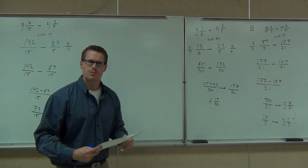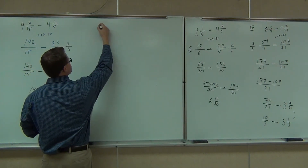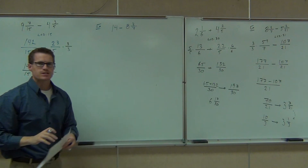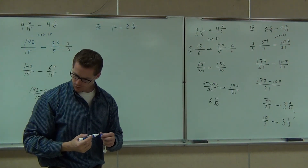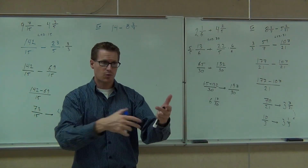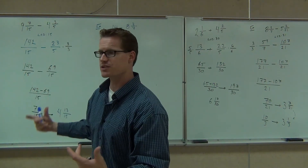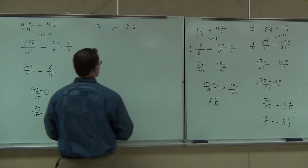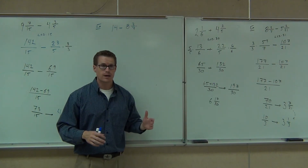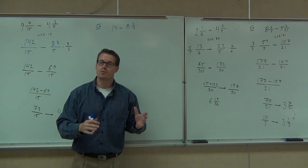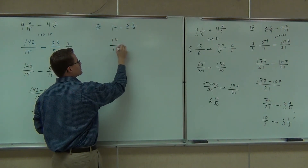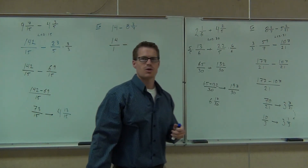Can you do the same thing with a whole number? Let's see: 14 minus 8 and 3 sevenths. Yeah, let's put a 1 underneath that. We are going to change 14 into an improper fraction — 14 over 1. We cannot just subtract 14 minus 8. If you give me 6 and 3 sevenths, you've gone the wrong way. That's not appropriate — you're going to be way off. Instead, we're going to change this into an improper fraction: 14 over 1, minus 8 and 3 sevenths as an improper fraction — what does that give you? 59. 59 over 7. Perfect.